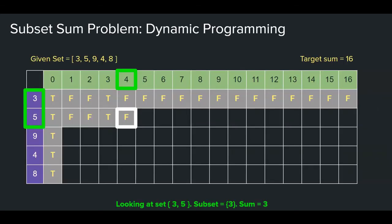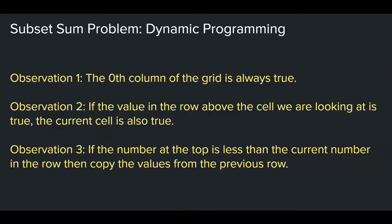There is no subset of 3 and 5 that will add up to 4, so false. Before we continue, let's make another observation here. These numbers are all smaller than 5. So if there was a sum in the subset of 3 and 5, for 1, 2, 3, and 4, none of them would include 5. It may or may not include 3, though. For that reason, since the answer to whether this is true or false depends on whether it is true or false in the previous row, we could just copy the values from the previous row to the current row. That leads us to our third observation. If the number at the top is less than the current number in the row, then copy the values from the previous row.